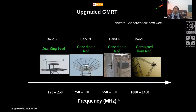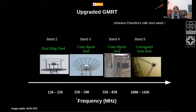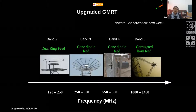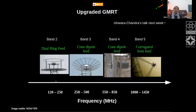GMRT can observe the sky at frequencies ranging from 120 MHz to about 1450 MHz, and this whole range can be covered but only in subbands at a time. The lowest subband is band two of the upgraded GMRT, with a dual ring feed. There is the cone dipole feed at band three, which is 250 to 500 MHz.